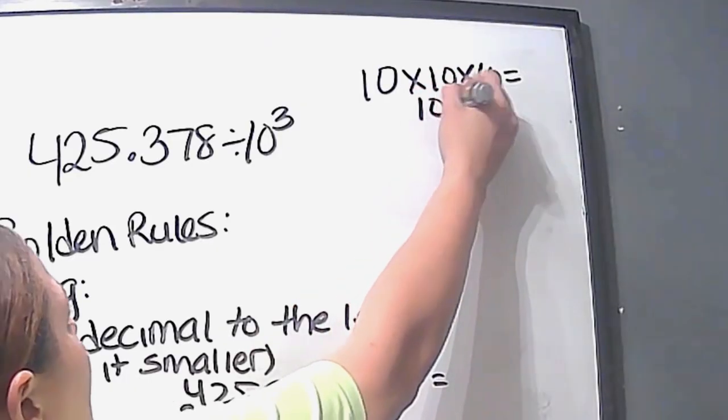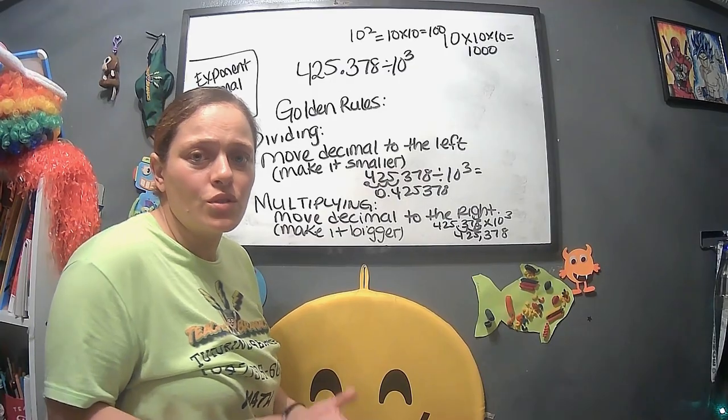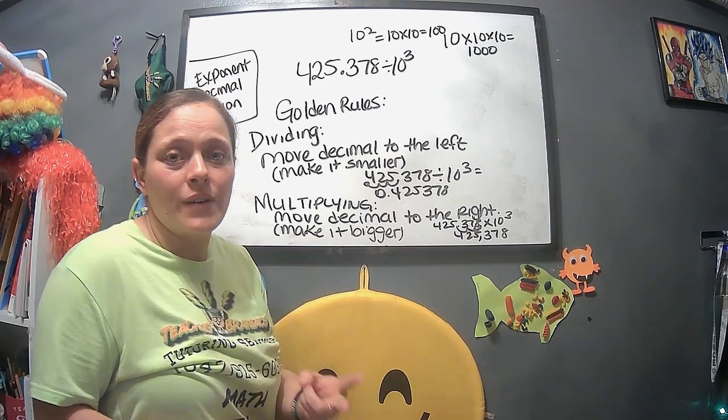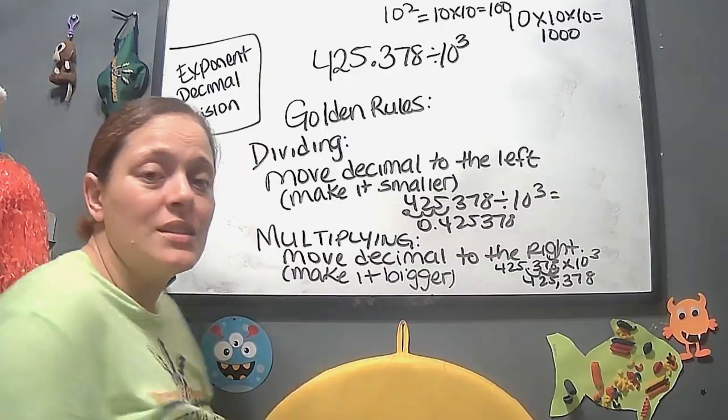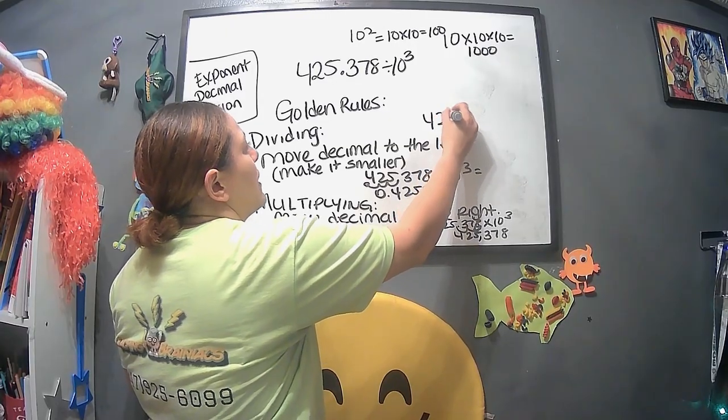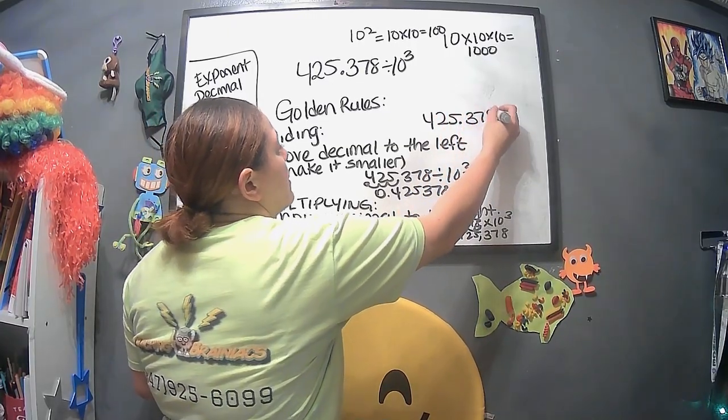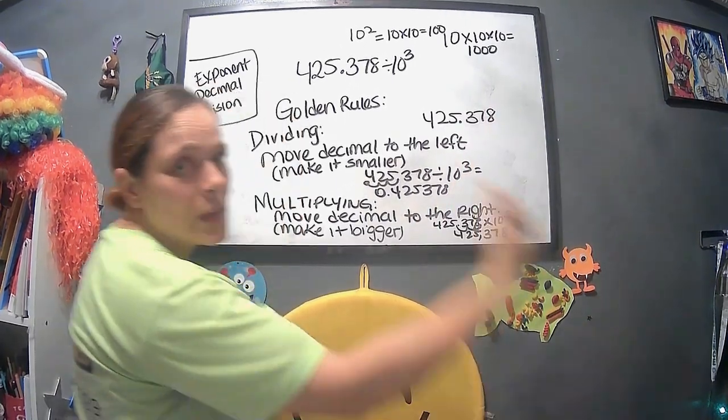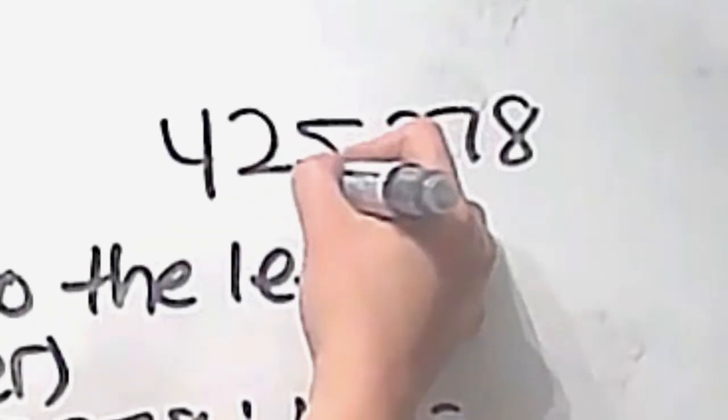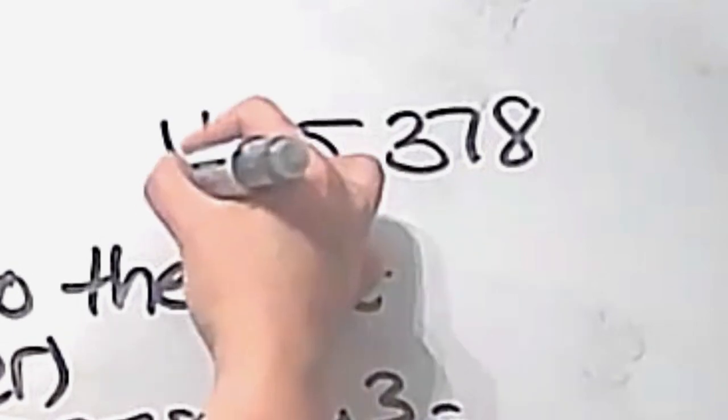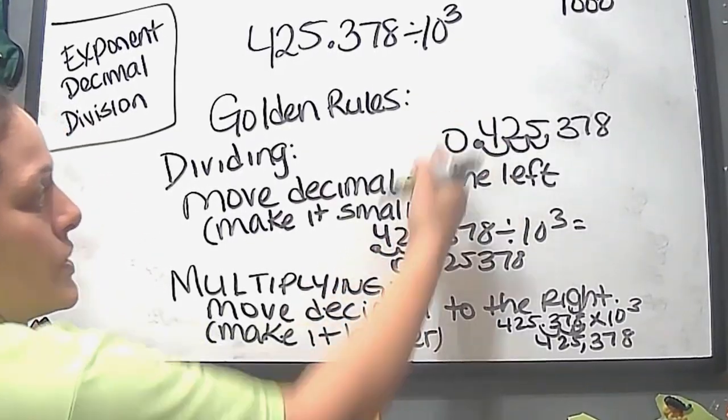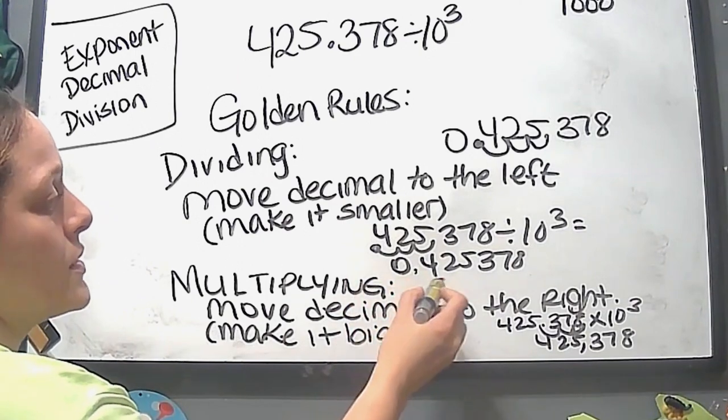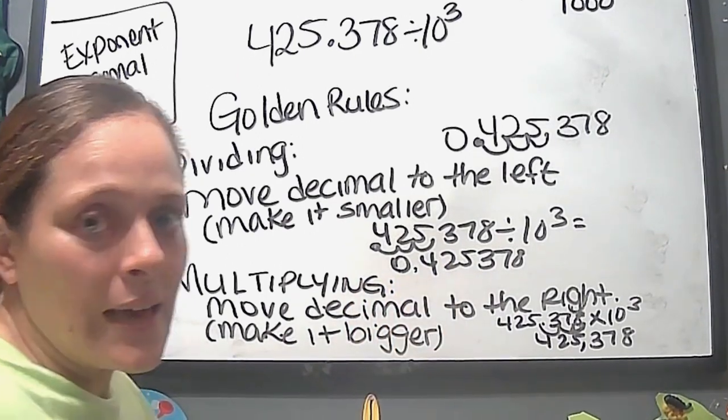These are some golden rules when it comes to multiplying and dividing by exponents. When we're dividing, we move the decimal to the left, 425.378. Then we move it to the left. So we have to move it 1, 2, 3. And then we're going to get the 0, right? We put a 0 there. 0.425.378.